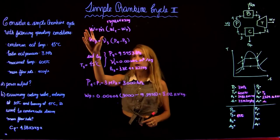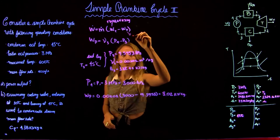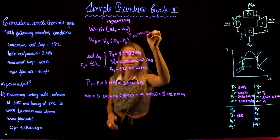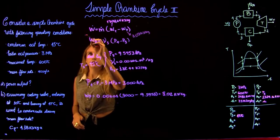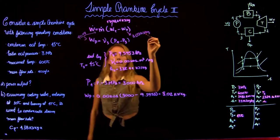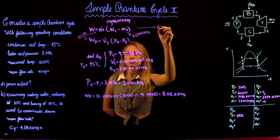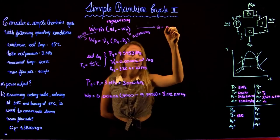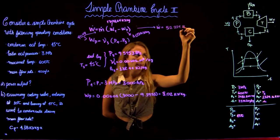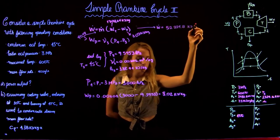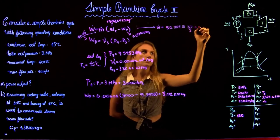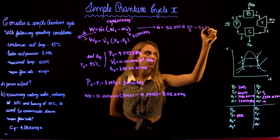Now we can go back to our power output equation and plug in the numbers. The turbine work is 1308.64 kJ/kg and the pump work is 3.02 kJ/kg; the mass flow rate given is 40 kg/s. That gives a net power output of 52,224.8 kJ/s, which equals 52.2 megawatts.